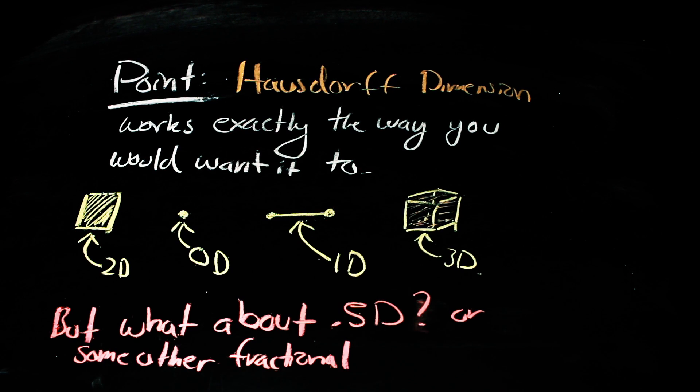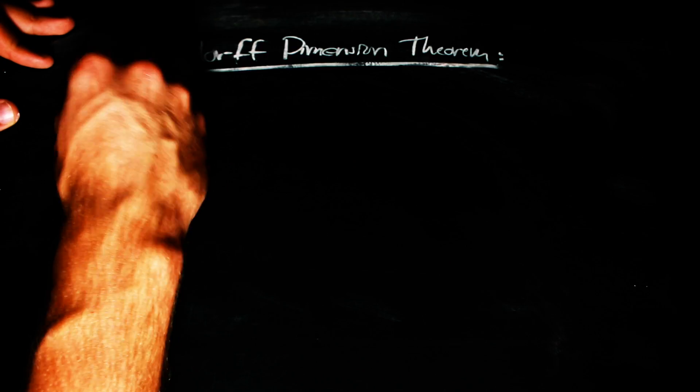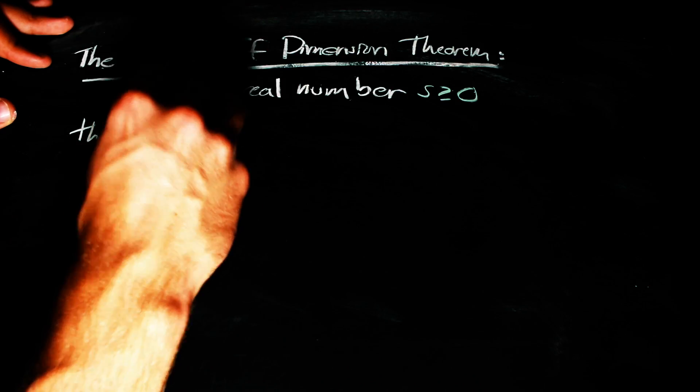So, what does a non-whole-numbered dimensional set look like? There's no intuitive object that we can use to measure a set that has dimension 0.5 or some other non-integer number, but there are sets that do have such a dimension.